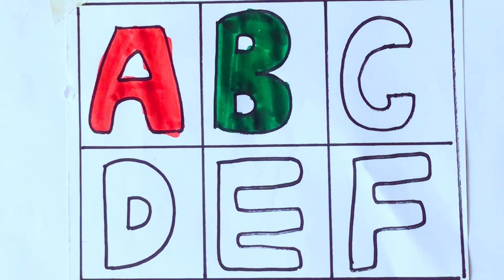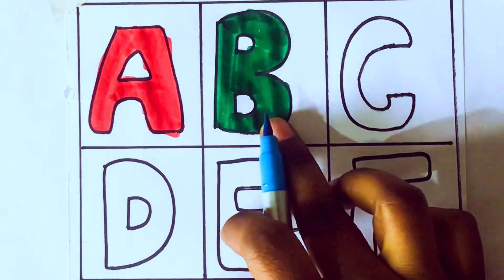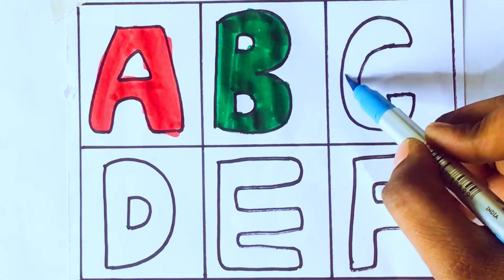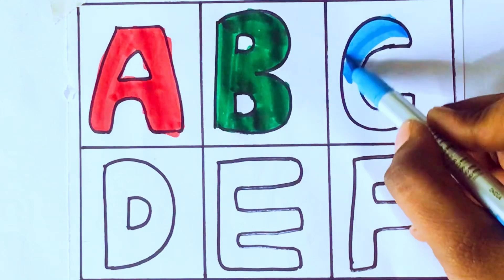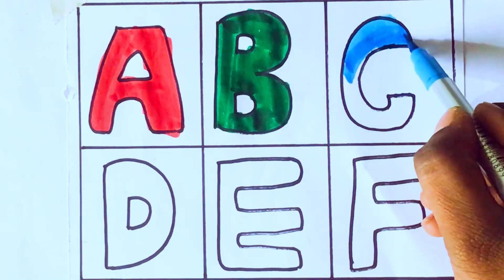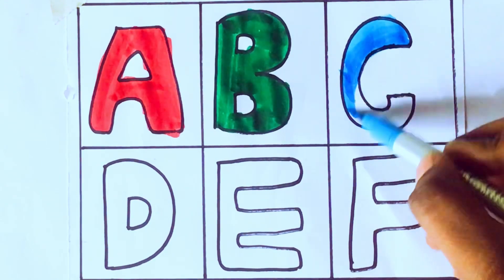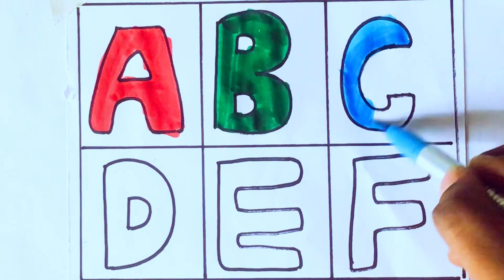Sky blue color, yellow color. C comes after B. Which letter comes next? C for Cat. C-A-T, Cat.